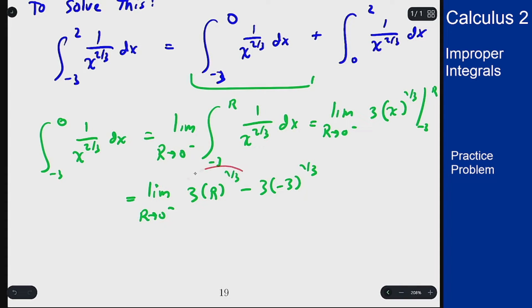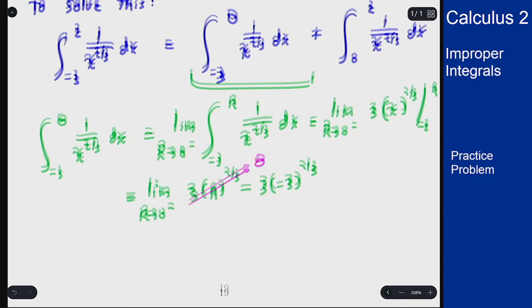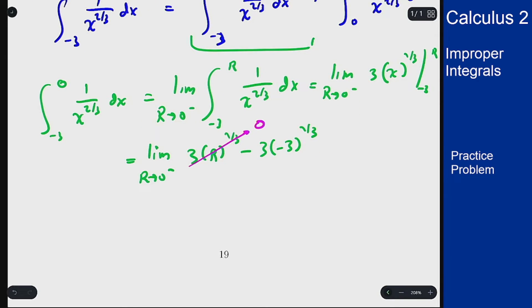Now as r goes to 0 this term here also goes to 0 because the r here is in the numerator as a positive power so 0 to any positive power is 0. This term is going to vanish in the limit meaning we are left with just 3 cube root of 3 because the minus sign here can move outside. We get 3 cube root of 3.